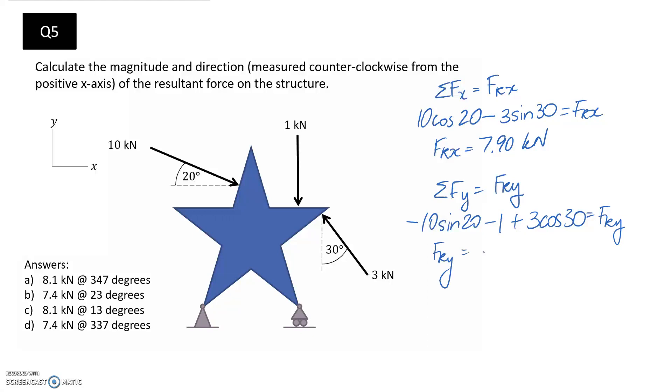So if you go and put this into a calculator, it comes out to negative 1.82 kilonewtons. So all that the negative is telling you is that the resultant of these three forces is actually going downwards.